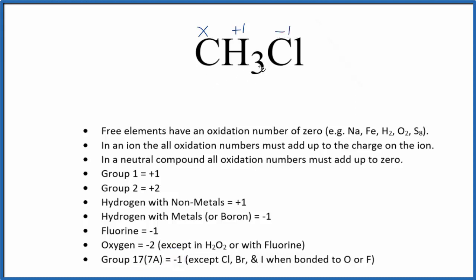We said that CH3Cl is a neutral compound, so all of these are going to add up to zero. We could just set up an equation: X plus one times three, since we have three hydrogens, minus one, that should equal zero.